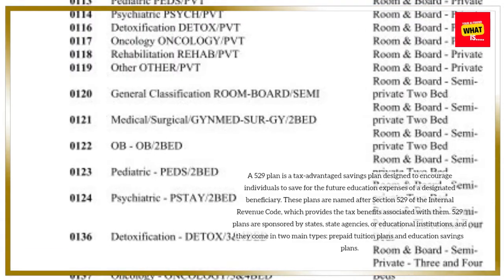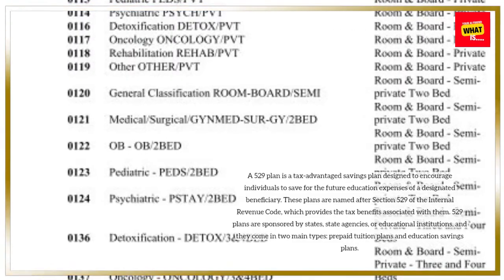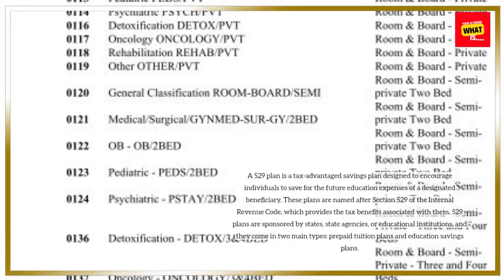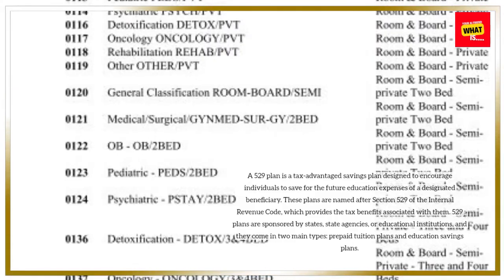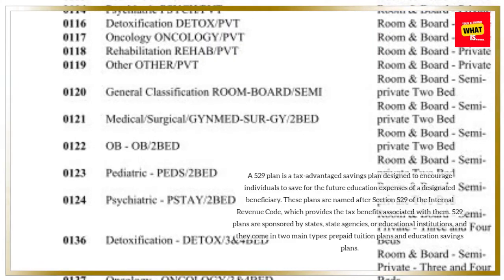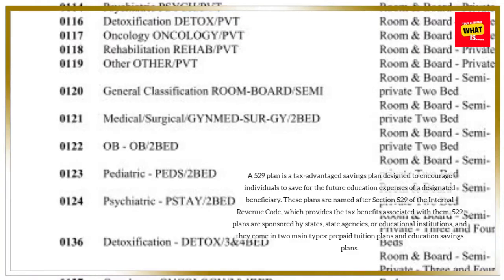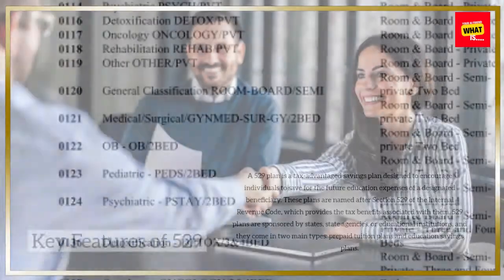529 plans are sponsored by states, state agencies, or educational institutions, and they come in two main types: prepaid tuition plans and education savings plans.